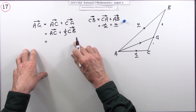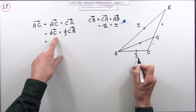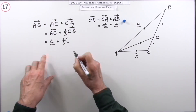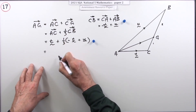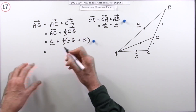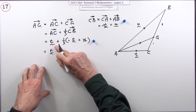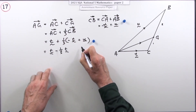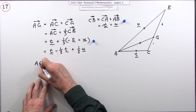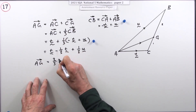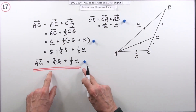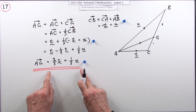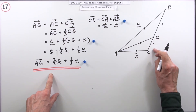Now feed in the third: AG equals AC plus one third of CB, which is t plus one third of (negative t plus u). That gets the mark. Tidying up: t minus one third t plus one third u gives two thirds t plus one third u. So AG equals two thirds t plus one third u. This result is related to the section formula — a method for finding coordinates of a point dividing a line in a given ratio.